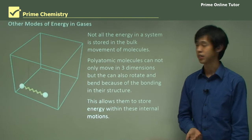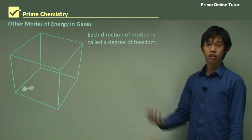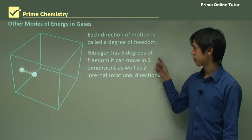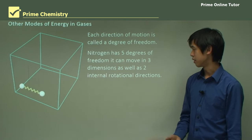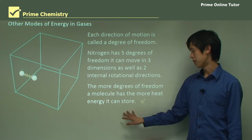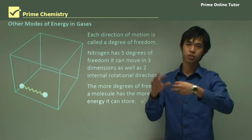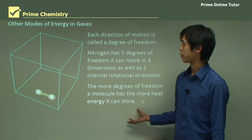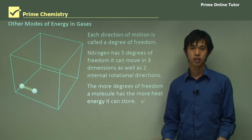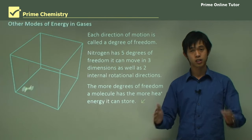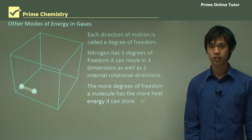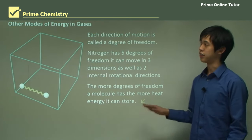This allows molecules to store energy within internal motions: external translation in three dimensions, rotations, and also bond stretching. Each direction of motion is called a degree of freedom. Some molecules have five degrees of freedom or less — for example, nitrogen has five degrees of freedom: movement in three dimensions plus two internal rotational directions. The more degrees of freedom a molecule has, the more heat energy it can store. That concludes the lesson — we'll move on to the question segment.